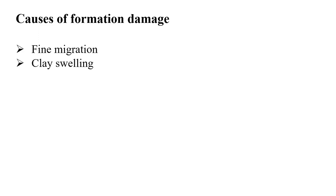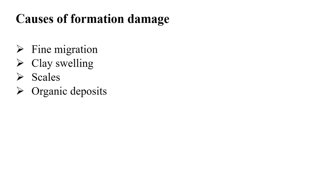We have clay swelling. Certain types of clay like smectite swell a lot when they absorb water — close to about 600 percent of their size. So when this clay absorbs water and grows, it blocks the pore spaces, thereby damaging certain areas within the formation. We have scales also, which are inorganic crystals deposited as a result of interaction between fluids within the formation. These deposits, when around the wellbore, can damage that zone and reduce its permeability. We could also have organic deposits like paraffins and asphaltenes around that particular wellbore zone.